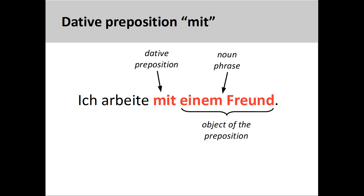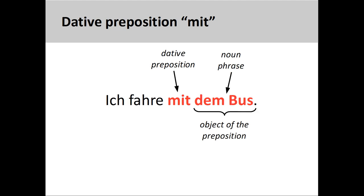The preposition mit is similar to the English preposition with. For example, ich arbeite mit einem Freund — I am working with a friend. Here there is no definite article in the noun phrase, but the dative case is indicated by the strong adjective ending em. The preposition can also be used to describe the mode of transportation, as in ich fahre mit dem Bus — I am traveling by bus.